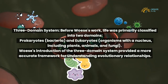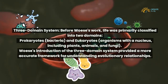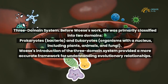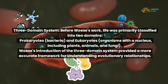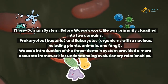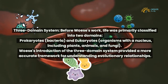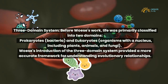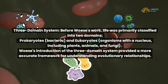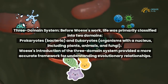Three-domain system: Before Woese's work, life was primarily classified into two domains — prokaryotes (bacteria) and eukaryotes (organisms with a nucleus, including plants, animals, and fungi). Woese's introduction of the three-domain system provided a more accurate framework for understanding evolutionary relationships.